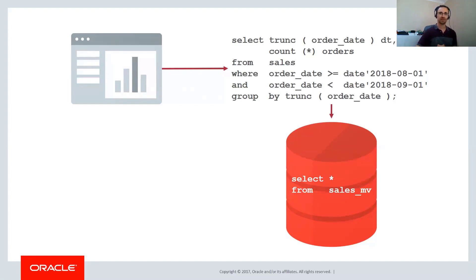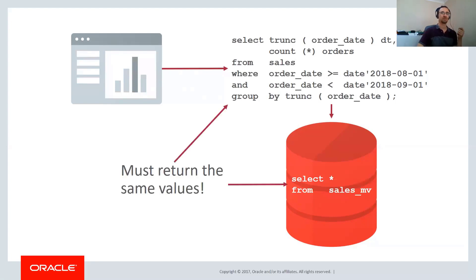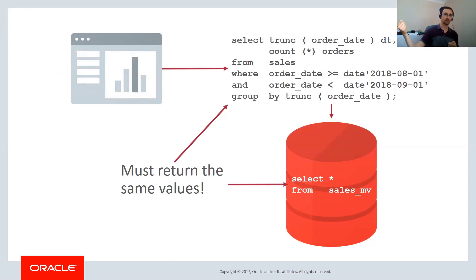The database can do this transparently — you don't need to go through all your code and change it to point at the materialized view. However, there's one important caveat: by default, the data stored in the materialized view and the data in the underlying tables must be identical. Oracle's default position is that you want the most accurate, up-to-date information unless you tell us otherwise.